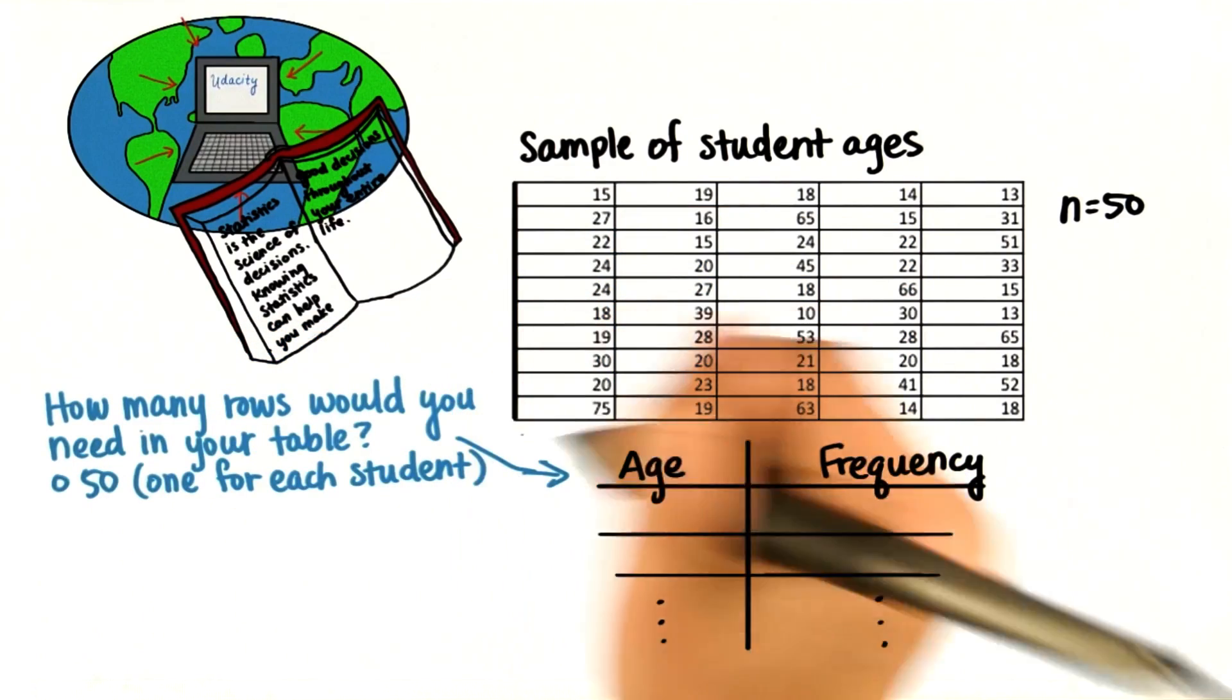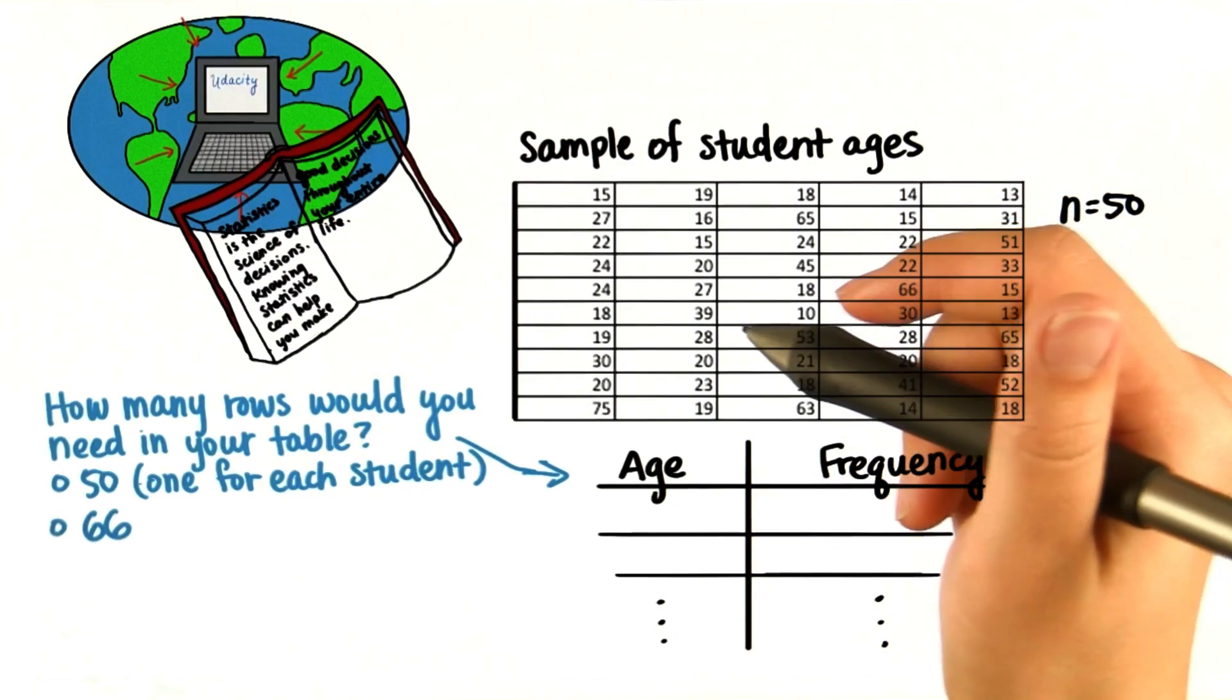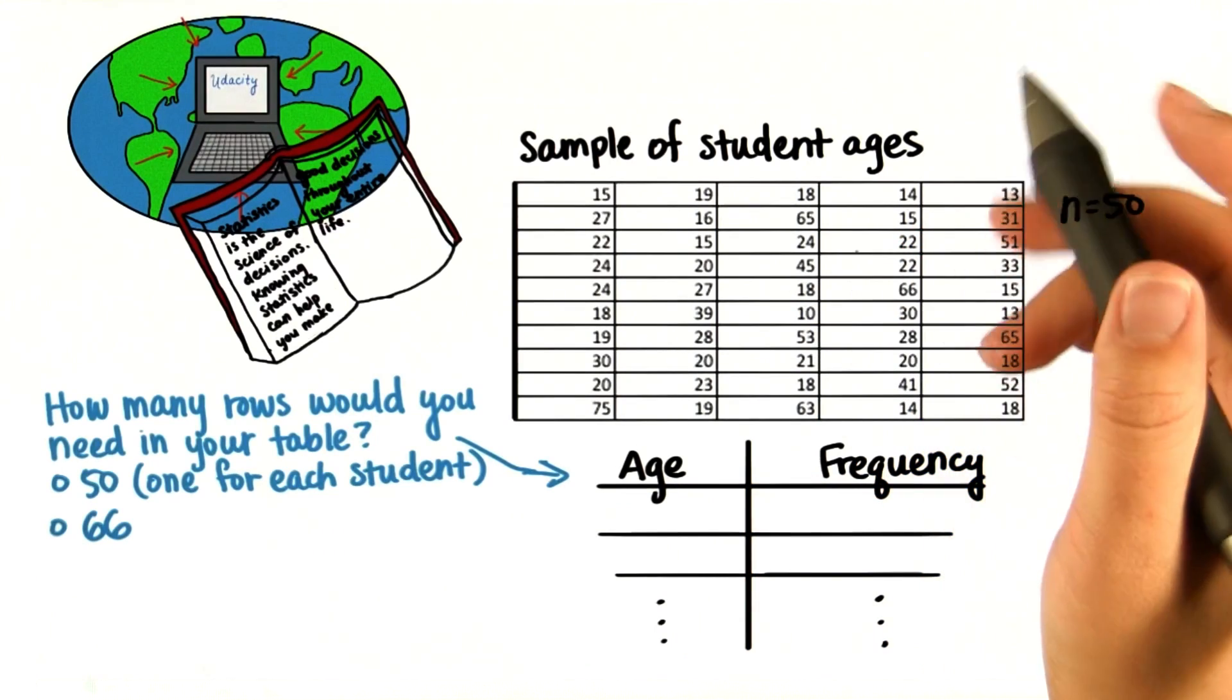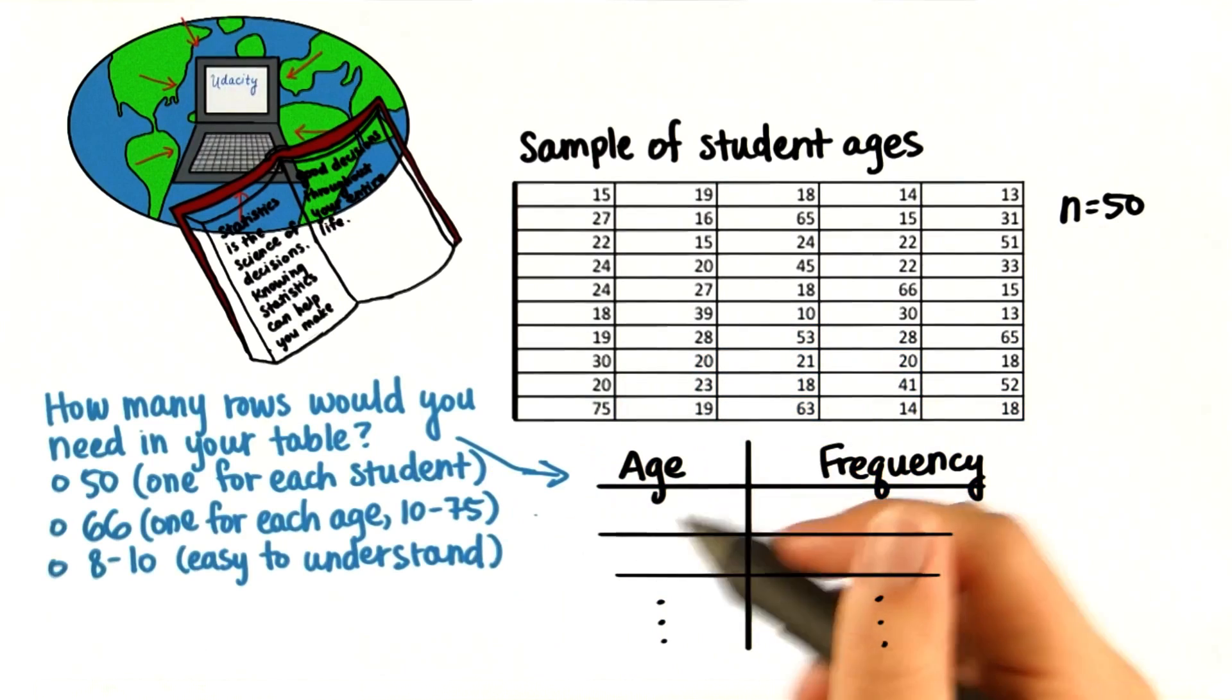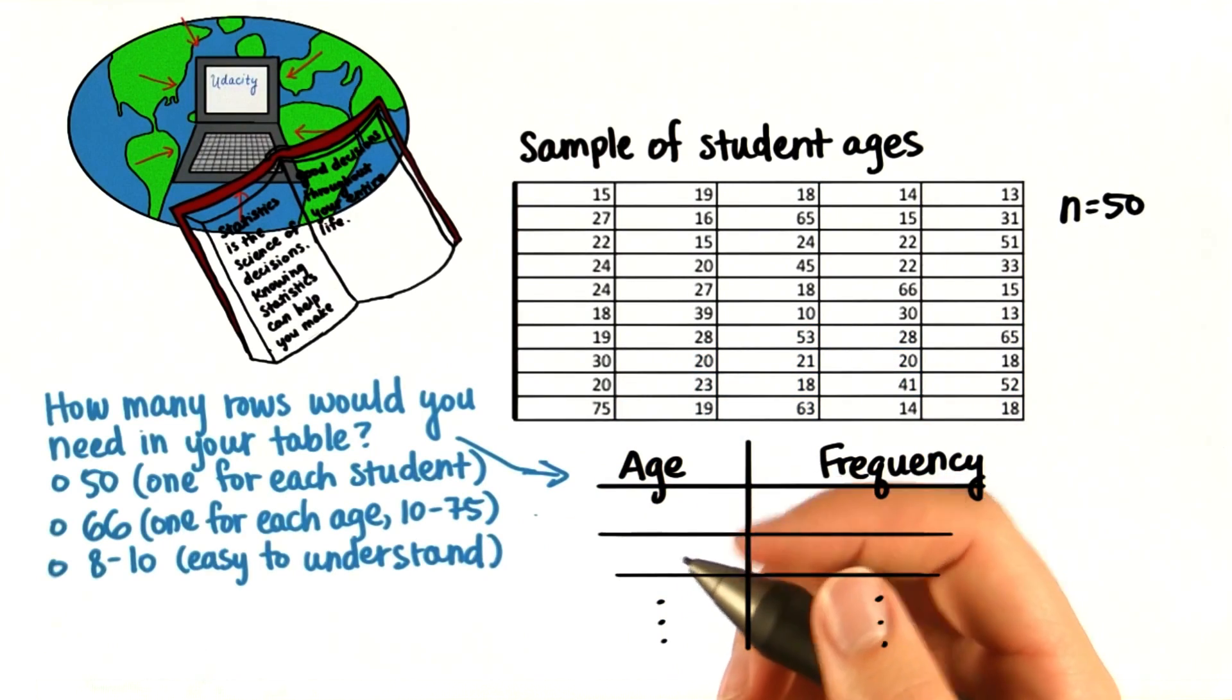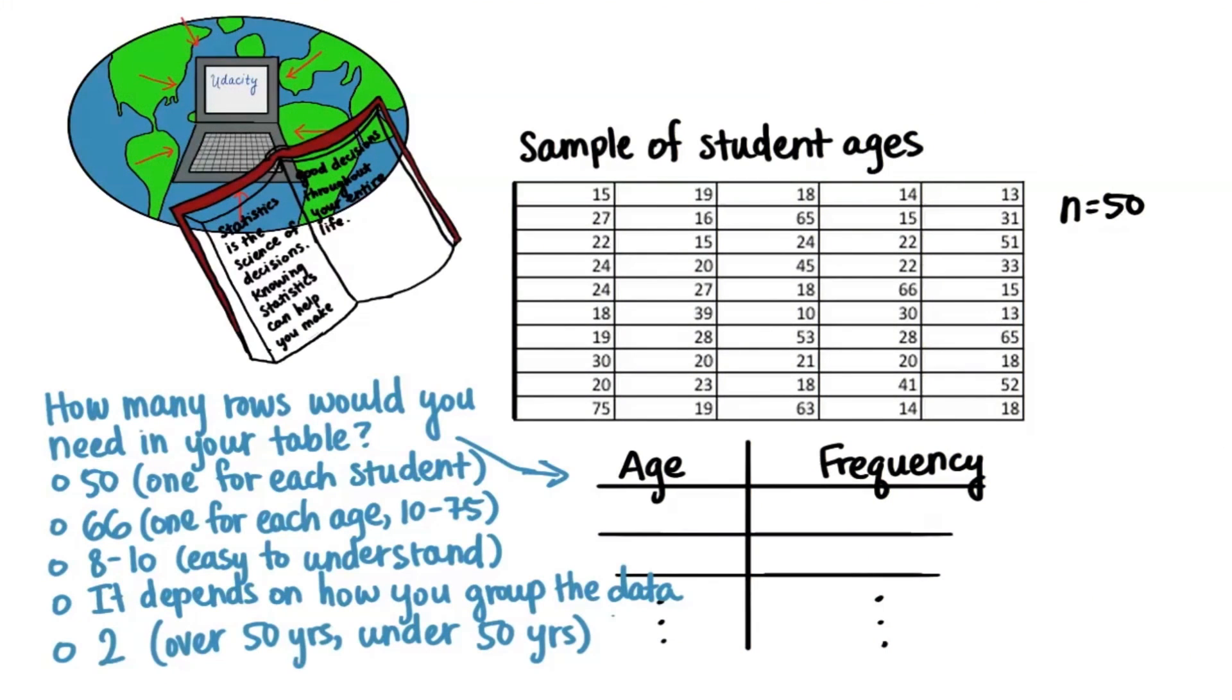Would you need 50, one for each age student in the sample? Or maybe 66 rows? One for each age from 10 years to 75 years? 8 to 10 rows because that's just easiest to understand. It depends on how you group the data. Or two rows, one for over 50 years old and one for under 50 years old.